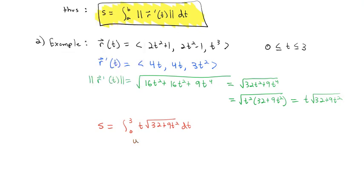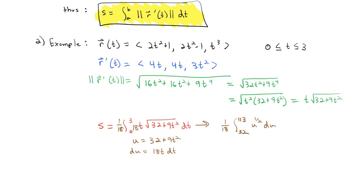We can take this integral using u-substitution where u = 32 + 9t². That makes du = 18t dt. So we'll multiply by 18 inside and 1/18 outside. Plugging 0 and 3 into the u equation: we get 32 + 0 = 32, and plugging in 3, 9 times 9 is 81, 81 + 32 is 113. The 18t dt becomes our du and the square root becomes u^(1/2), which integrates to u^(3/2) times 2/3, with 1/18 on the outside, evaluated from 32 to 113.